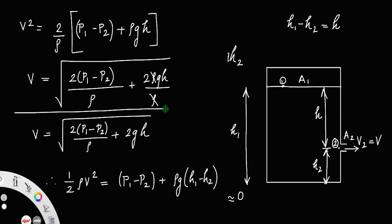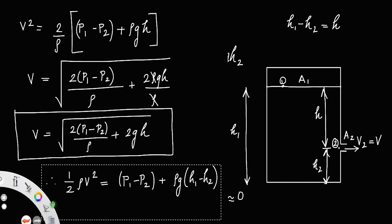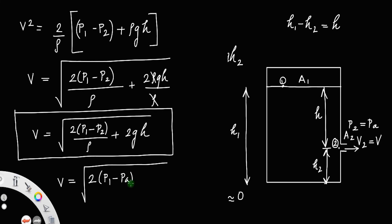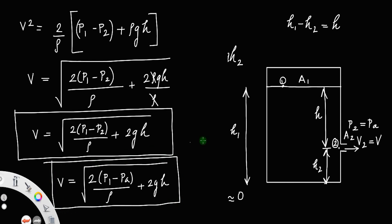This is the expression for the velocity of the liquid coming out of the hole. Since the hole is open to the atmosphere, the pressure at point 2, p2, will be atmospheric pressure pA. Therefore, v equals the square root of [2(p1 minus pA) / rho plus 2gh]. This is a special case of the above equation where p2 equals pA.